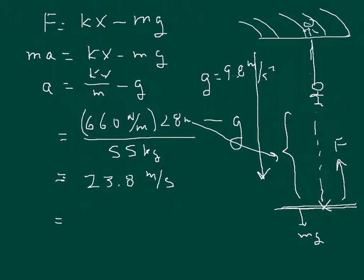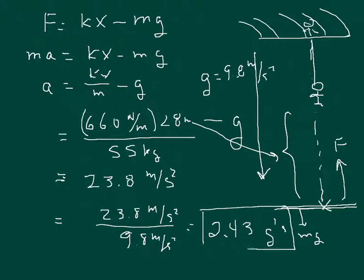But in multiples of g, we have to divide 23.8 meters per second squared divided by 9.8 meters per second squared, and we get an answer of 2.43 g's.